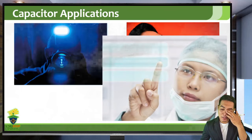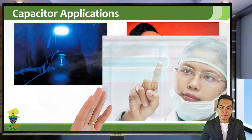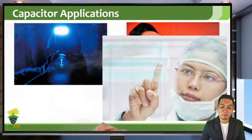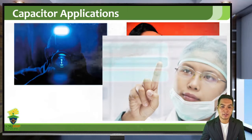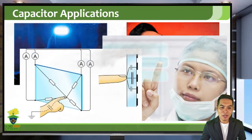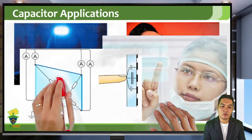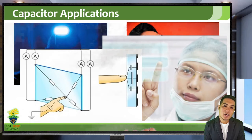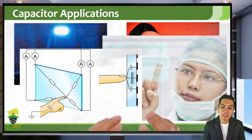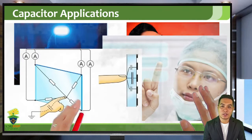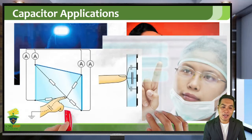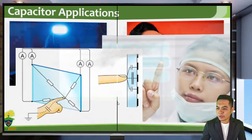Similar to the capacitive microphone, capacitive touchscreen technology uses capacitors in the display. When you touch the screen, your hand acts as a capacitor connected in the circuit with the screen's capacitors, changing the local capacitance. The device detects this change as a touch or gesture at that specific point.